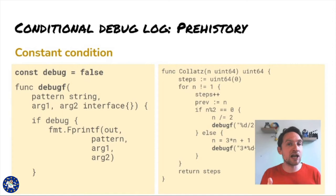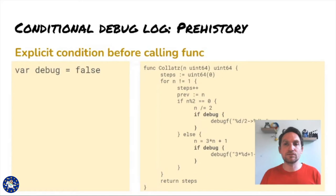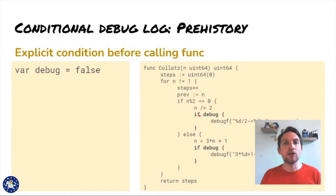Using a constant value incurred basically the same performance problem. When DCE — dead code elimination — was less sophisticated, even testing a constant would incur a runtime performance penalty. However, the more severe burden was the cost of calling the function. How about wrapping each debugf call inside an explicit if block? This effectively saves an expensive function call when the constant or variable condition is false. The downside is that it's more visually verbose — three lines of code instead of one for each debug print, everywhere in the program.